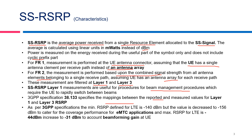The 3GPP specification 38.133 defines the mapping between the reported value and the measured value for layer 1 and layer 3 RSRP. As per 3GPP, the minimum RSRP defined for 4G LTE was minus 140 dBm. But in later releases, this RSRP value was decreased to minus 156 dBm to cover the coverage performance requirements for machine type communication or IoT applications.